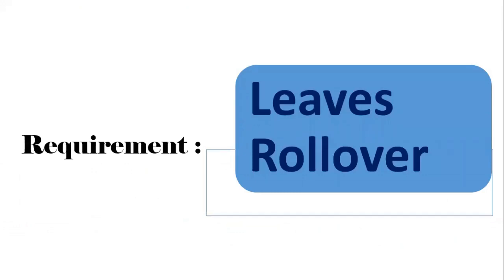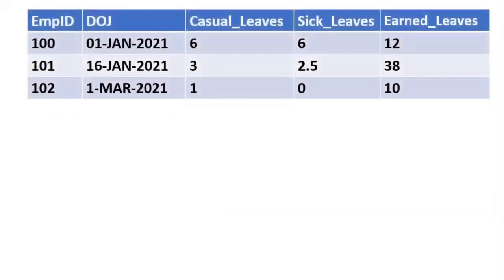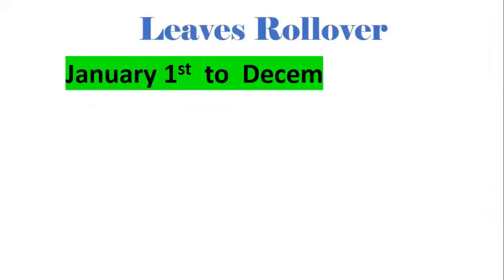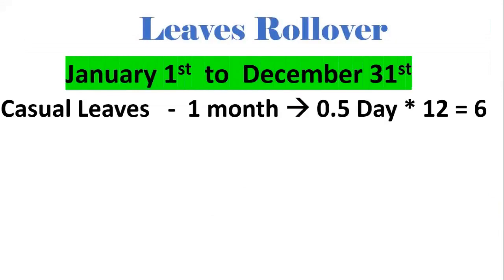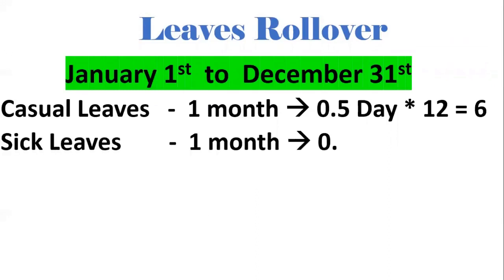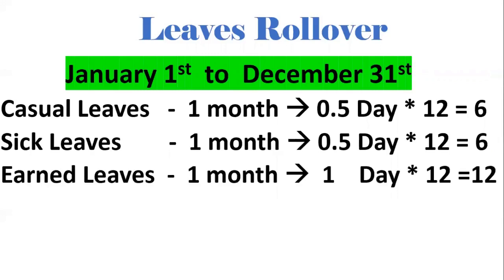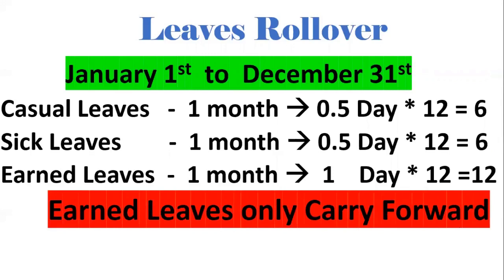The second requirement is leaves rollover — at the start of the year we need to carry leaves forward for all employees. We consider leaves from January 1st to December 31st. Casual and sick leaves are 0.5 per month, so for 12 months we add 6 casual and 6 sick leaves. Earned leaves get 12 added. Only earned leaves are carried forward — casual and sick are reset to 6 and 6 respectively, i.e., 0 plus 6 for each.